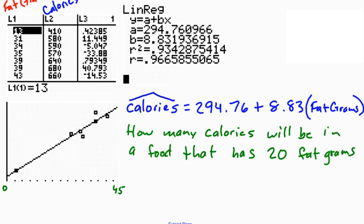Well, you just use some algebra, just plug in the appropriate values, and we end up getting, I'm going to go back to y hat, equals 294.76 plus 8.83 times 20 for my 20 fat grams.